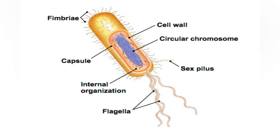This appendage ranges from 3 to 10 nanometers in diameter and can be as much as several micrometers long. Fimbria are used by bacteria to adhere to one another and to adhere to animal cells and some inanimate objects. A bacterium can have as many as 1,000 fimbria. Fimbria are only visible with the use of an electron microscope. They may be straight or flexible.